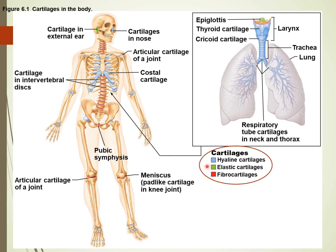Think joints for hyaline cartilage — we'll talk more about joints at the end of this unit. Elastic cartilage, shown in green, is not very common. Think your ear — very flexible and moldable. It's also found in the epiglottis in the larynx, which is part of your swallowing mechanism. We'll cover that more in the respiratory and digestive system lectures.